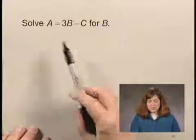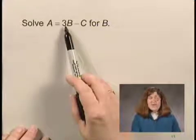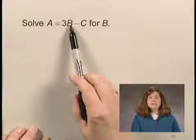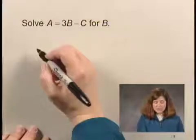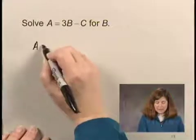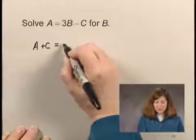So in order to do that, I see that I have a term containing B, 3B, on the right side of the equation. I'm going to add C on both sides of the equation.